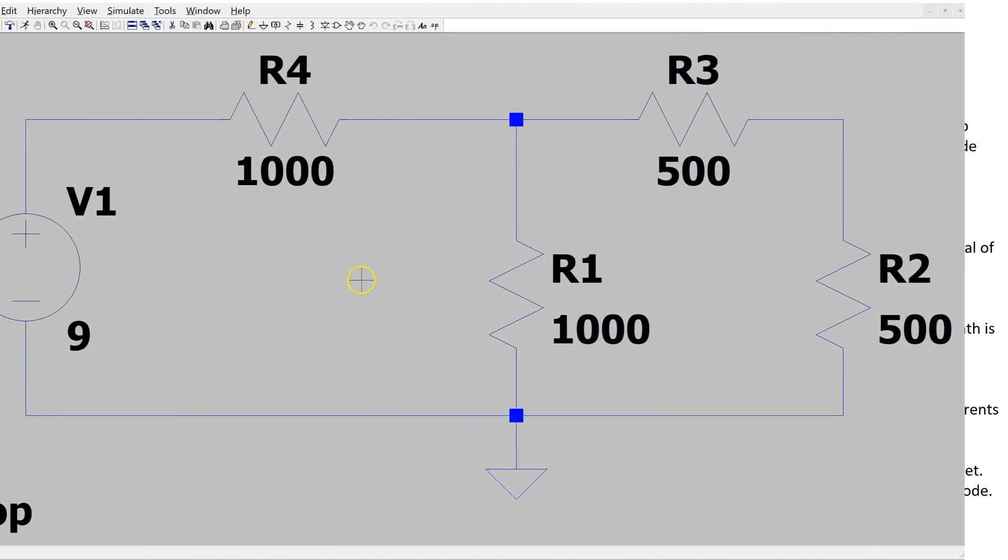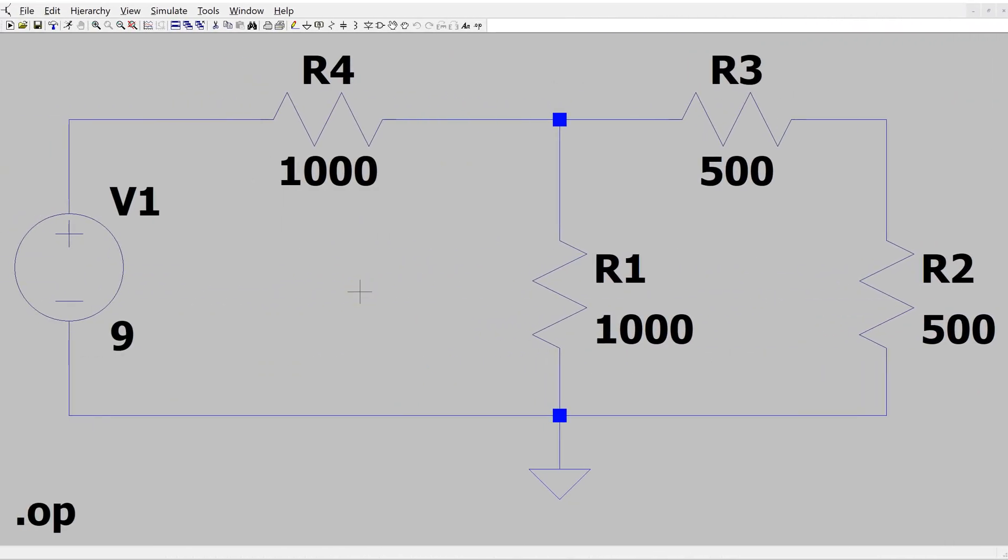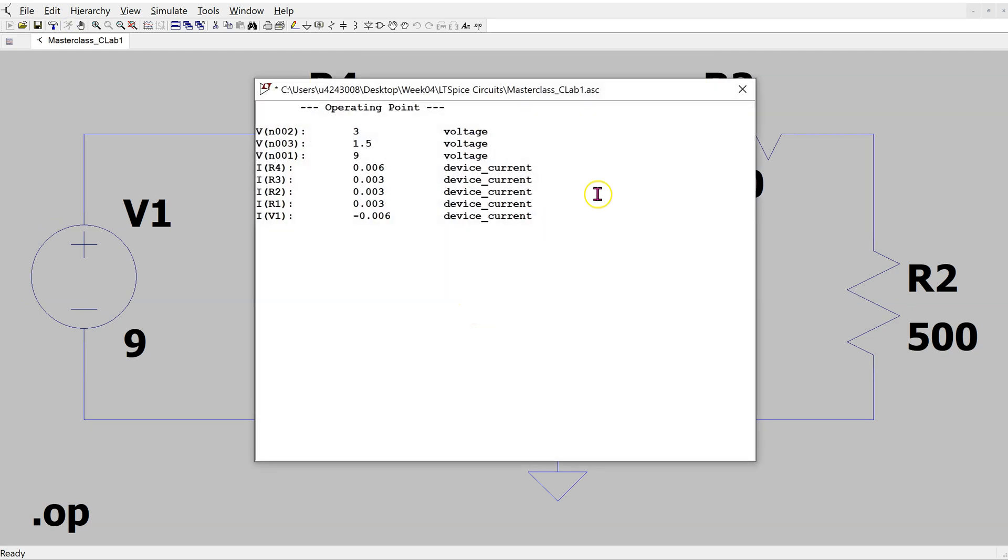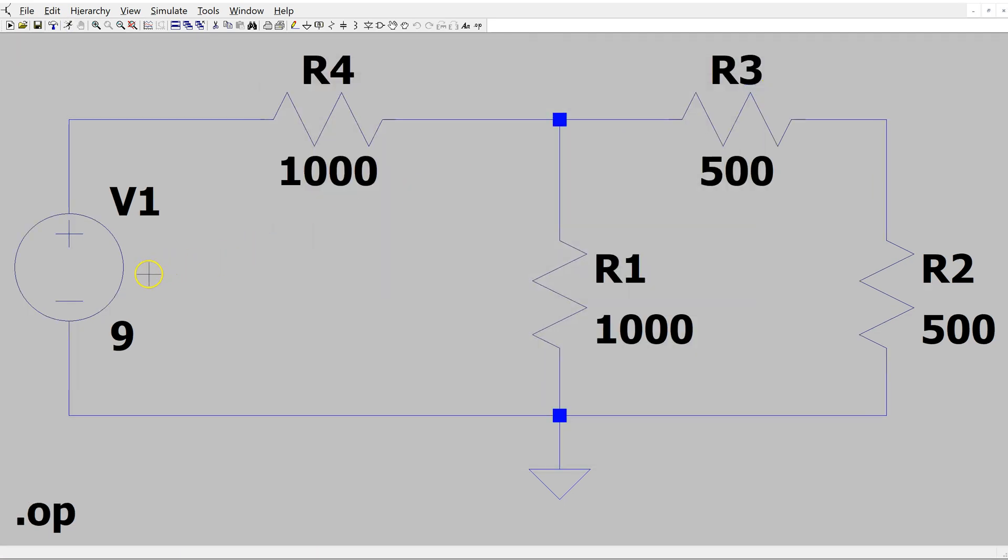We can verify the solution using LTSpice. This is the same circuit constructed in LTSpice. And we can run this simulation. And then if I hover the cursor above the independent voltage source symbol, we can see in the bottom left corner that the power dissipation is minus 54 milliwatt as we calculated. So this confirms the solution.